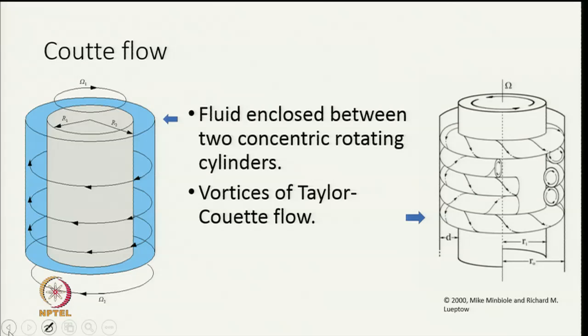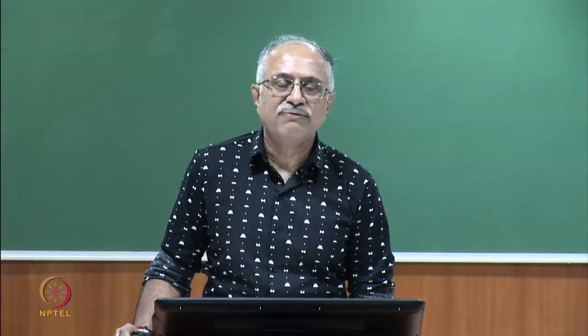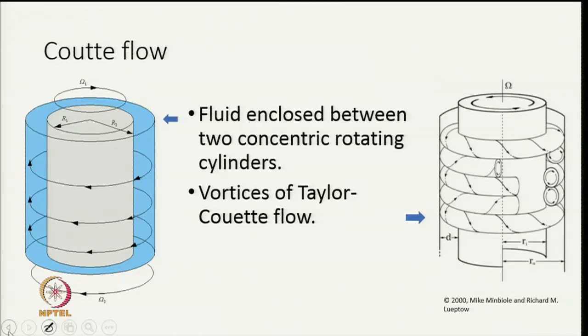More interesting still, worthy of a lot of study, is the so called Couette flow. This occurs when you have a fluid encased between two concentric rotating cylinders. The image on the left shows this geometry: you have one cylinder of radius r1 rotating at angular velocity omega 1, and the outer cylinder has radius r2 rotating at angular velocity omega 2.